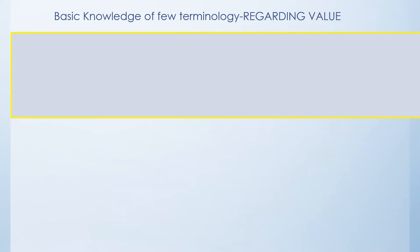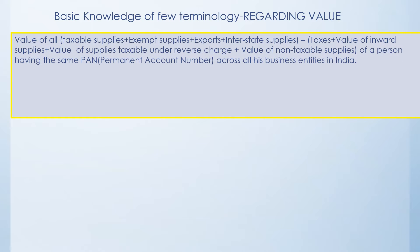Now let us look at the value, because at certain places registration is required when the value exceeds a particular amount. The value here means aggregate turnover. So value of all the goods — whether it is a taxable supply, whether it is an exempted supply, whether it is an export, or whether it is an interstate supply — all this value has to be added.